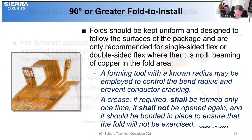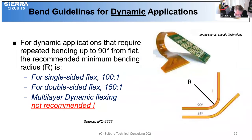Bend guidelines for dynamic applications are a little different. The dynamic application requires repeated bending to 90 degrees from flat. For single side, a 100 to 1 radius is required; for double side, it should be 150 to 1; and multi-layer flexors should not be considered for dynamic applications.